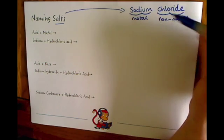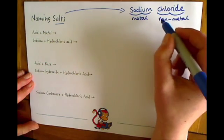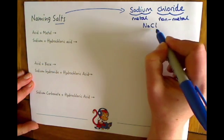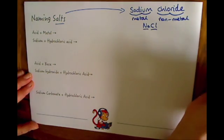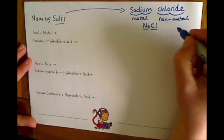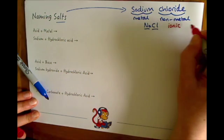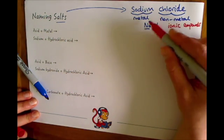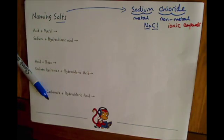All salts have two parts to their name. So sodium chloride in the word form is the same as NaCl if we were to write it as its chemical formula where Na is sodium and Cl is the chloride part. And these are ionic compounds.